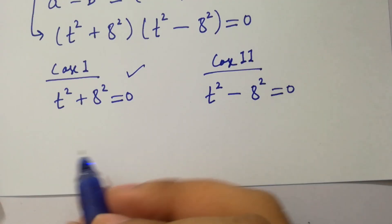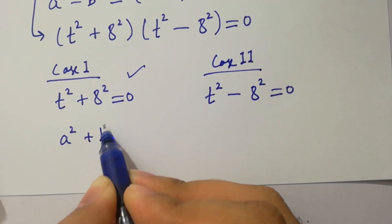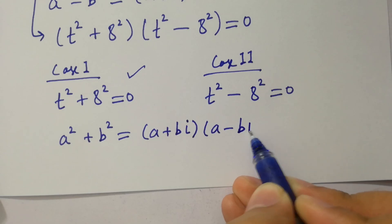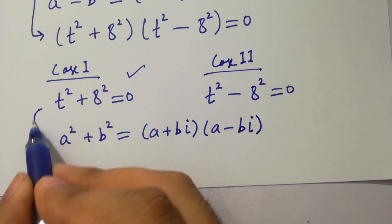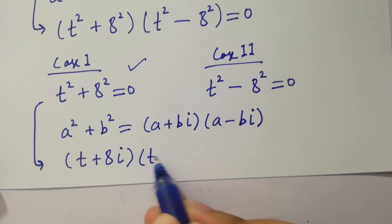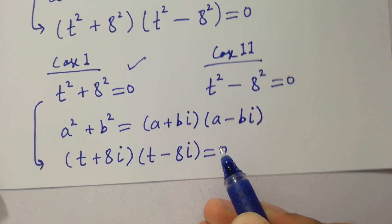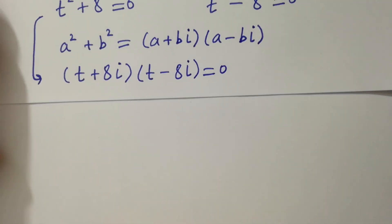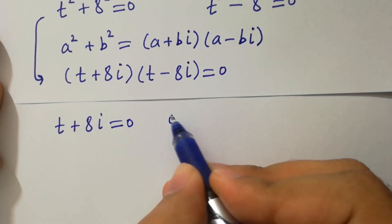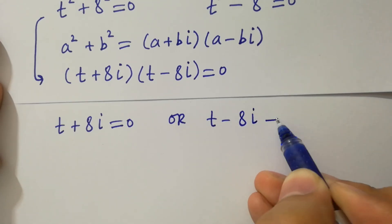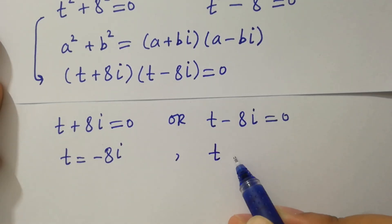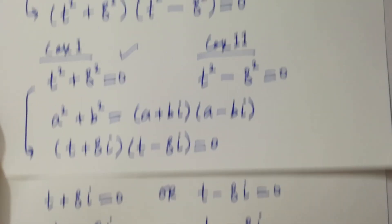From case one, we know the formula of a squared plus b squared equals a plus bi times a minus bi, where i is a complex number. Then it will be t plus 8i times t minus 8i equal to 0. So either t plus 8i equal to 0 or t minus 8i equal to 0, giving t equal to minus 8i and t equal to plus 8i.